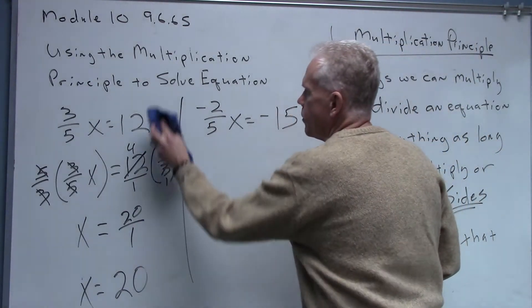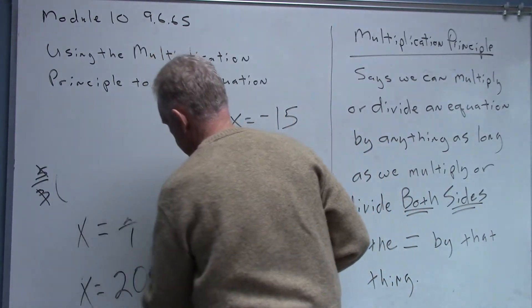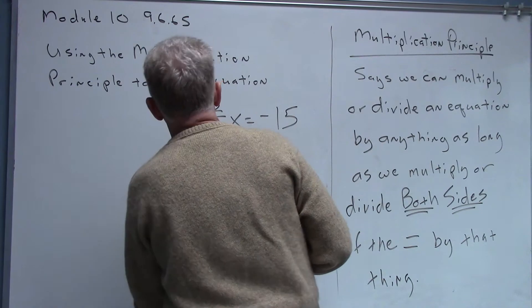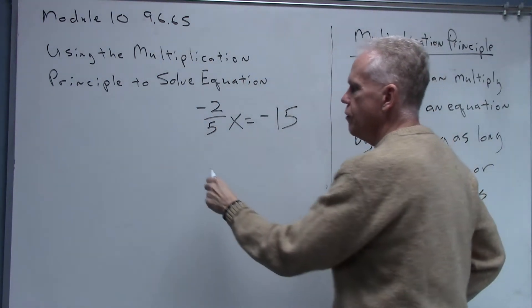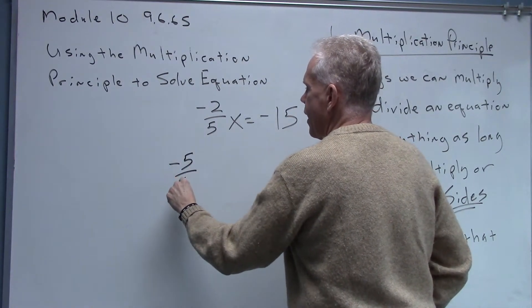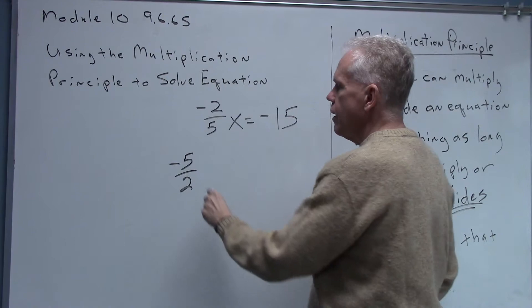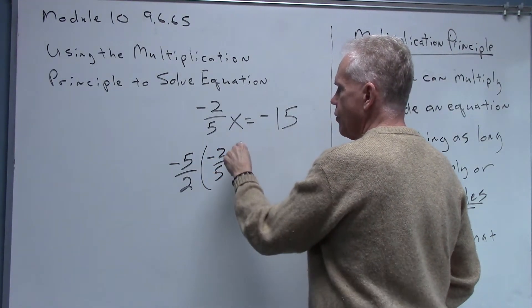All we're going to do to get rid of that negative two-fifths, and I'm going to create myself a little space here by erasing our previous problem, all we need to do to get rid of that negative two-fifths is to come in and multiply by negative five over two. Okay, so I'll come there, negative two-fifths x.